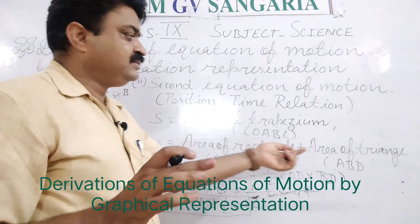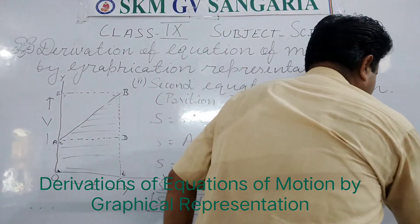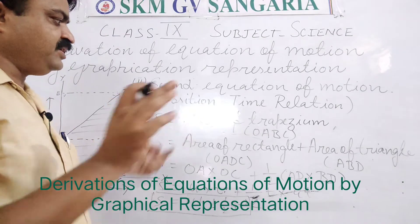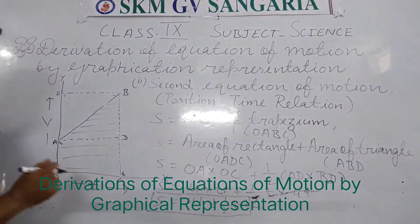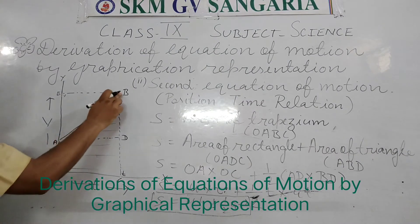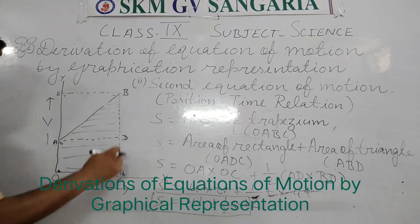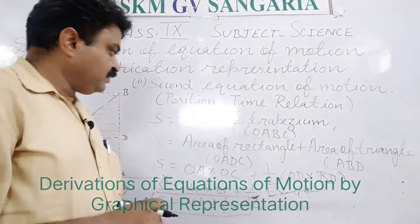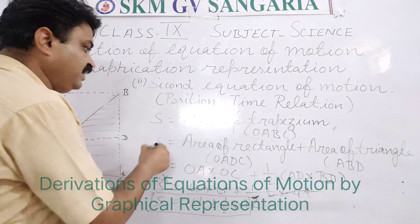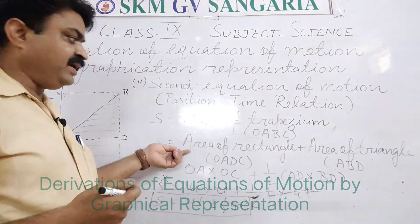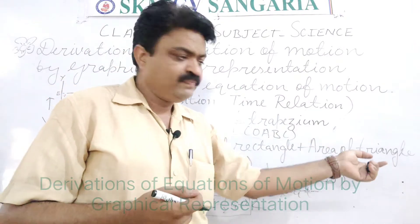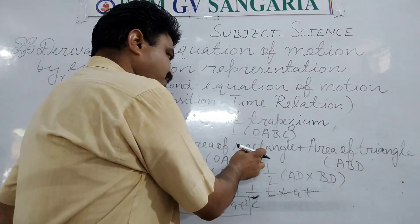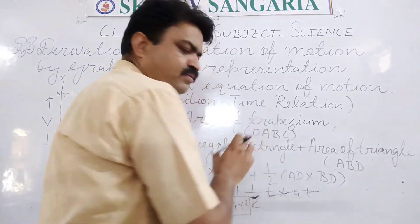The area of this trapezium is OABC. When we get the area of the trapezium, we add the area of the rectangle to the area of the triangle. The area of the rectangle is OADC, and the area of the triangle that we take is ABD.